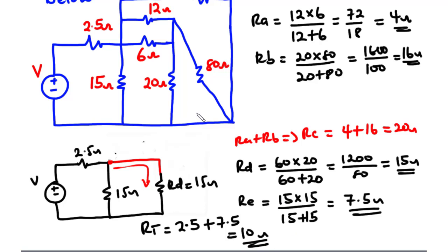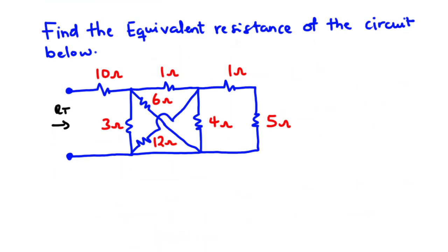The equivalent resistance for this circuit is 2.5 plus 7.5, which equals 10 ohms. That is the equivalent resistance for this particular circuit. Now let's solve the second example. We are going to find the equivalent resistance for the circuit below, which has eight resistors. The 1-ohm and 5-ohm resistors are connected in series because the same current flows through them, so their combined resistance is 1 plus 5 equals 6 ohms.